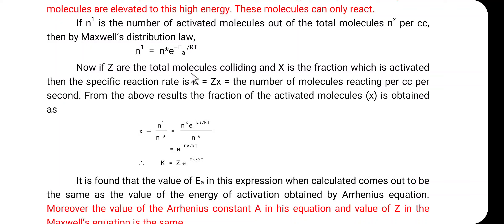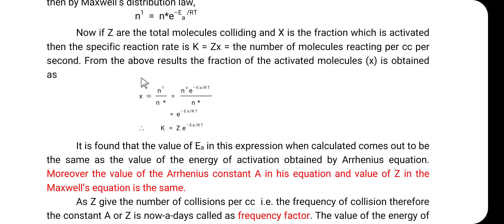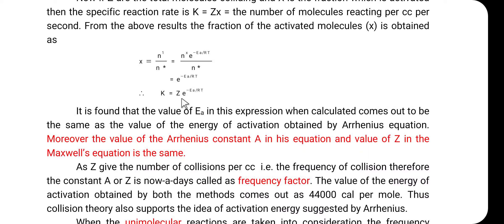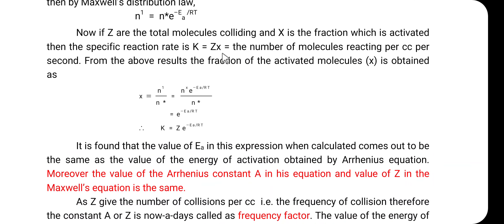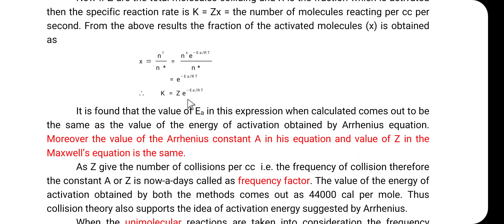Here Z is the total number of molecules colliding and x is the fraction which is activated, so k = Z · x = number of molecules reacting per cc per second. The fraction of activated molecules x is obtained as x = n1/n* = n* · e^(−Ea/RT) / n* = e^(−Ea/RT). Therefore k = Z · e^(−Ea/RT).